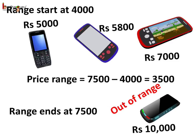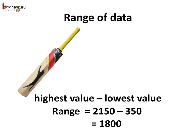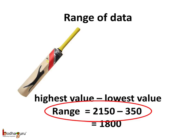All these are within the range as these prices are in between the starting and the ending of the range. But a phone of rupees 10,000 is out of this range, so you cannot buy it. The range means the spread of data — we just do highest value minus the lowest value. The cricket bat starts from rupees 350 and the most expensive cricket bat in the shop is rupees 2150. So the range of data here is 2150 minus 350, which is equal to 1800.